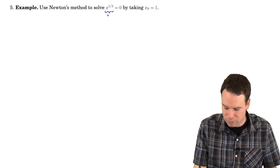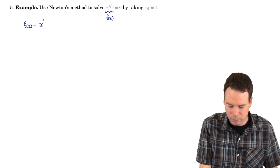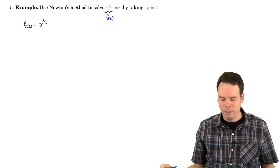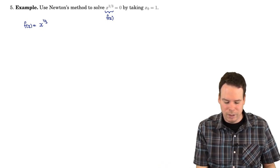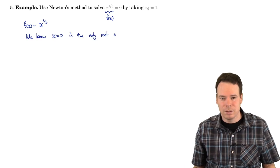So here's our function, that's f of x. f of x is equal to x to the one-third and we want to use Newton's method to find the root. Well, wait a minute. Why would we use Newton's method to find a root? We know that the only value which has a cubed root of zero is zero itself. So we already know that the solution to this is zero.